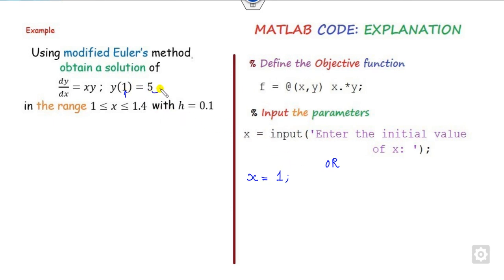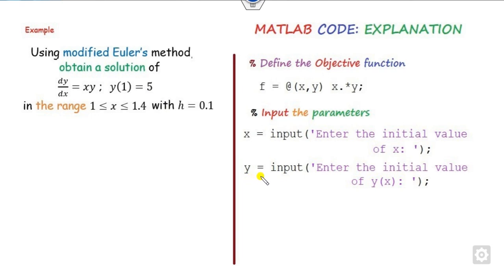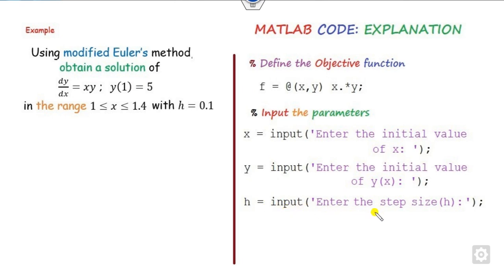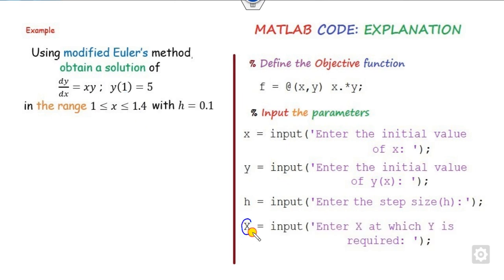The second parameter is the initial value of y. Again, you can use 'input: enter the value of the initial value of y(x)' — here that is 5. After that, write the step size h = 0.1 as given. You can write 'input: enter the step size h', or fix it directly as 0.1. Also, you need the target value: you start from 1, and the target value is 1.4. I denote this as capital X with 'input: enter the x at which y is required'. So you want to calculate y at x = 1.4.